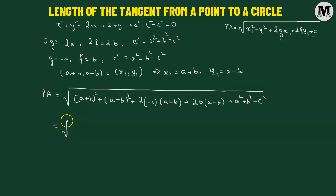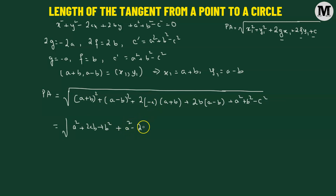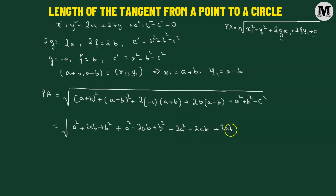Expanding each term: a plus b whole squared gives a squared plus 2ab plus b squared. Expanding a minus b whole squared gives a squared minus 2ab plus b squared. Then negative 2a multiplied by a plus b gives negative 2a squared minus 2ab. And 2b multiplied by a minus b gives 2ab minus 2b squared. Adding the constant a squared plus b squared minus c squared.